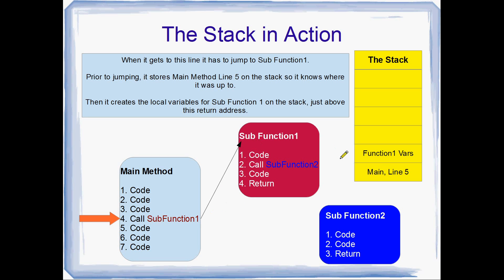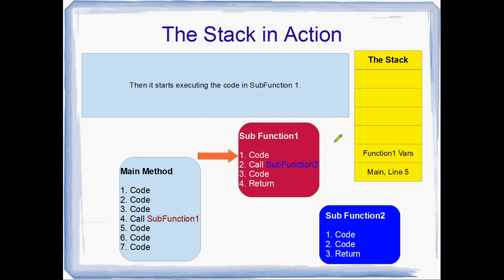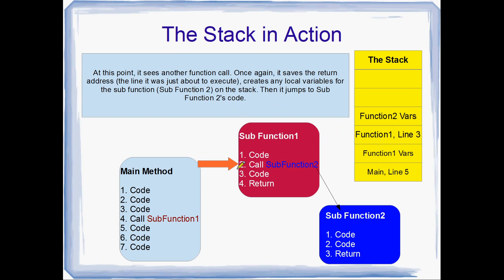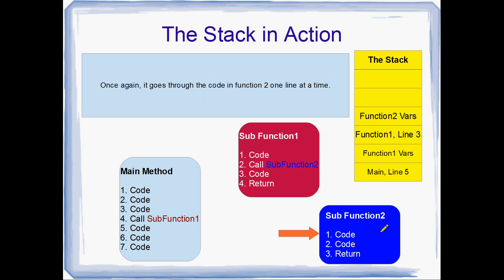Before it jumps to sub-function1, it's going to save where it was up to. So it was just about to execute line 5 of the main method, so it saves that to the stack. Then it creates sub-function1's local variables and puts those on the stack just above that return address. Then the CPU jumps straight to the code of sub-function1 and starts executing that one line after another, until it gets to another sub-function call — calling sub-function2. Once again it has to save to the stack where it was up to: line 3 of sub-function1. It puts this above the other stuff on the stack, then creates the local variables for sub-function2, and jumps down to execute sub-function2's code.